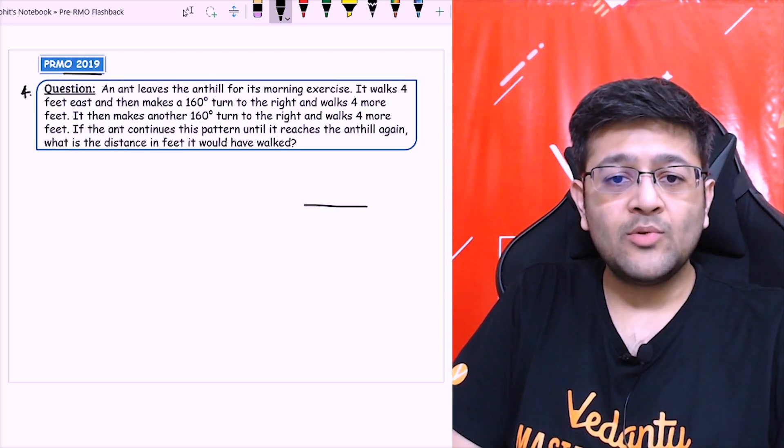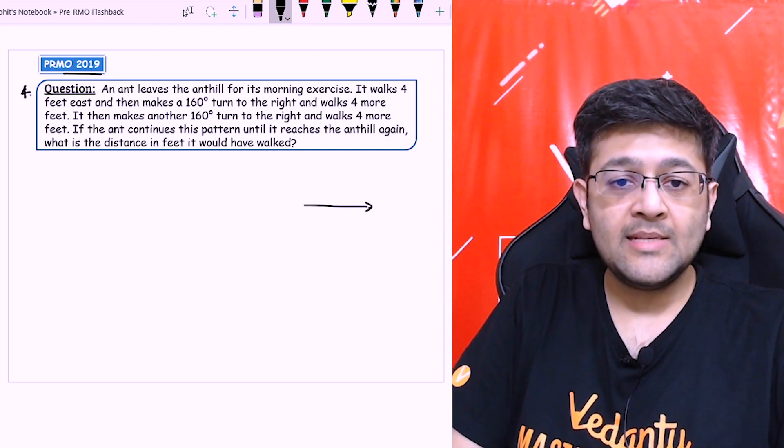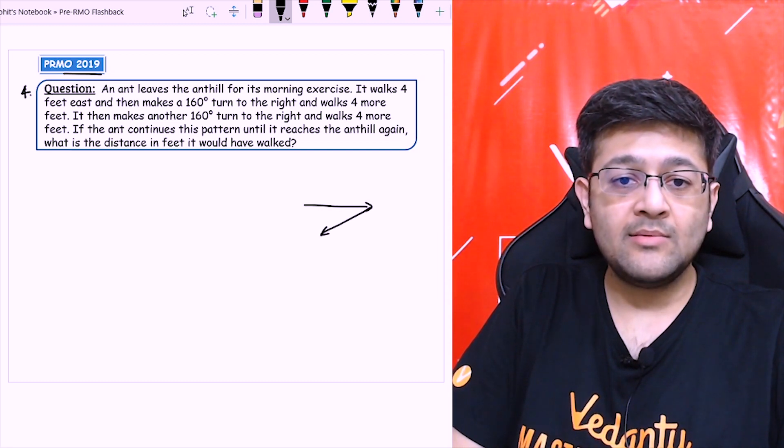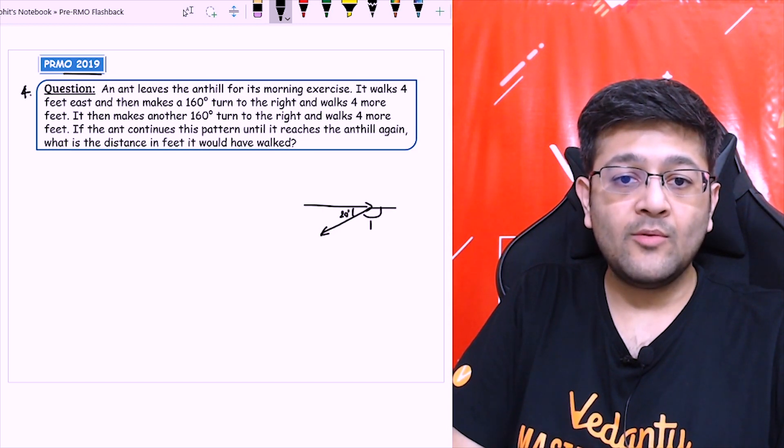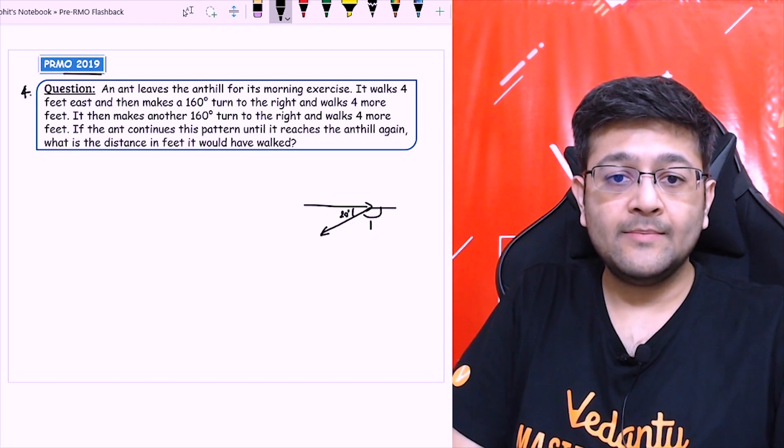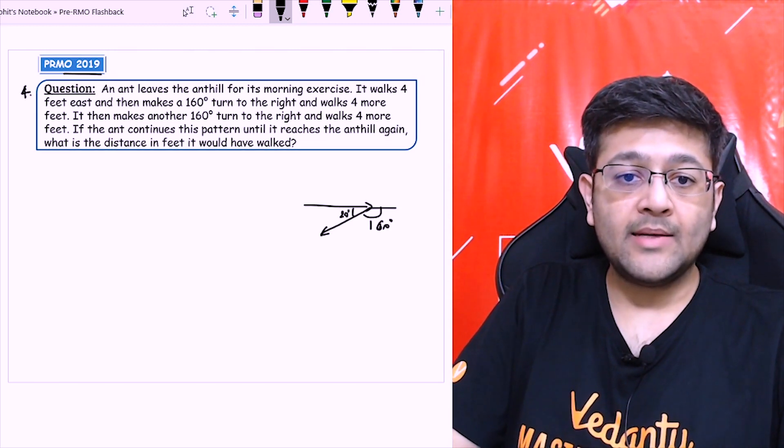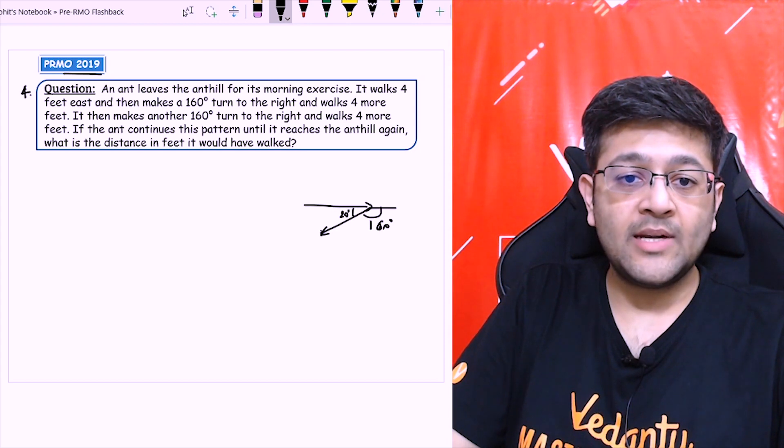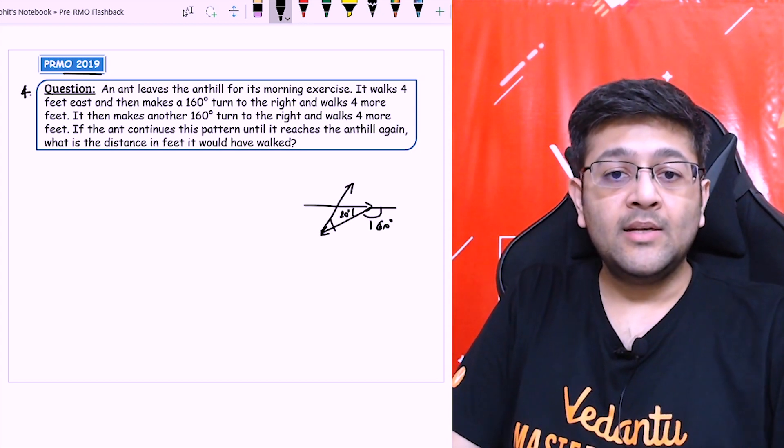The ant is going 4 feet in this direction, then it's rotating by 160 degrees in this direction. So this will be 20 actually and this angle will be 160. Then again, it rotates from the original direction by 160, so in this direction and so on.